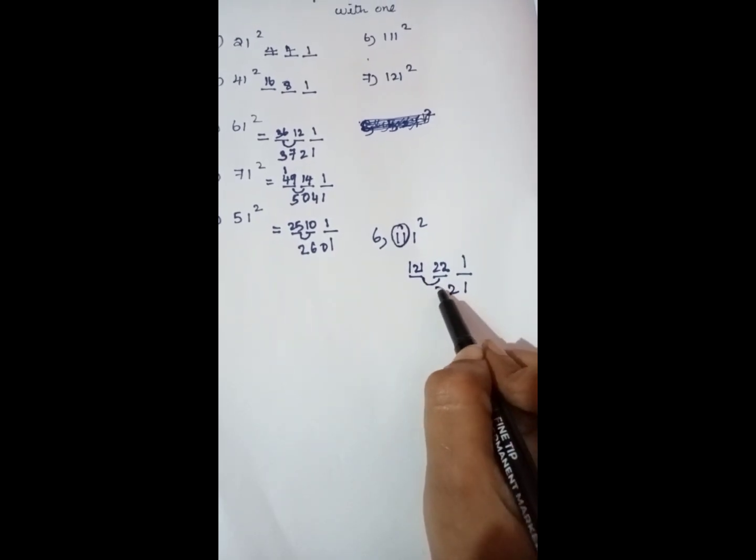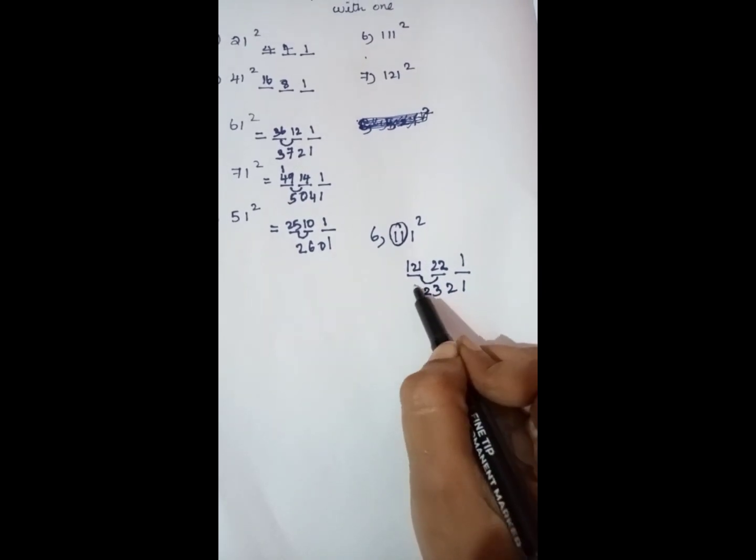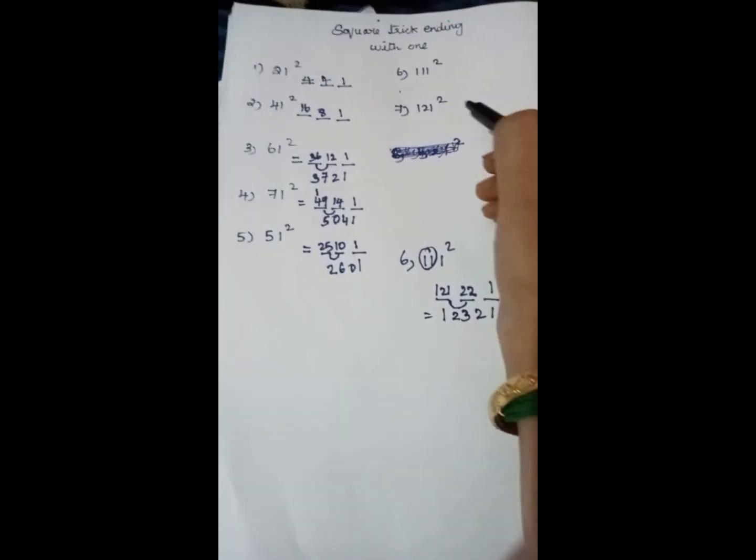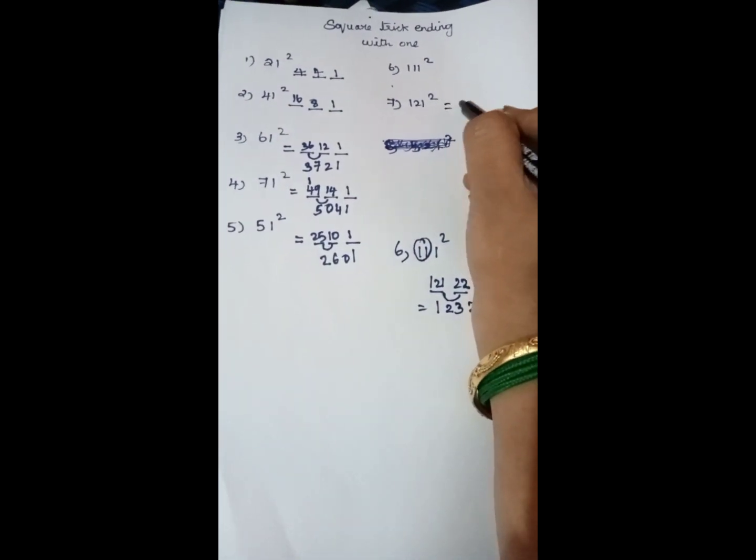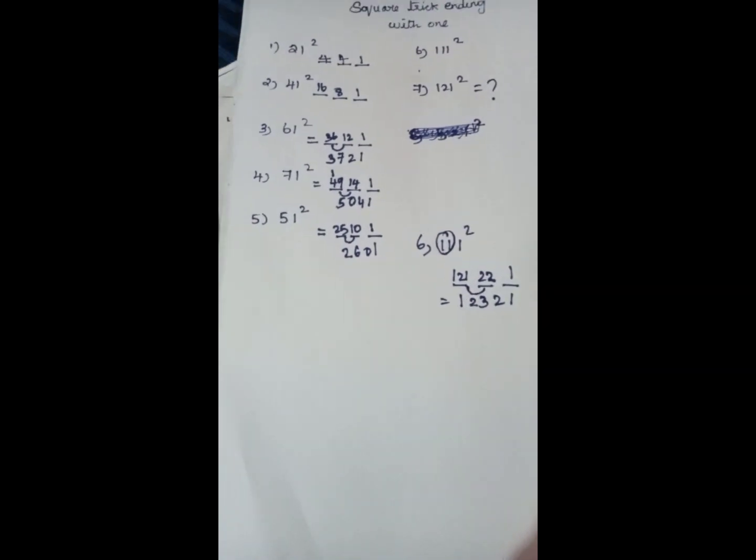Then remaining numbers come as it is, 2, 1, so 12321. So 121 square. Try it yourself. Thank you children.